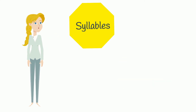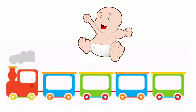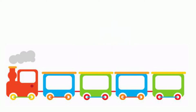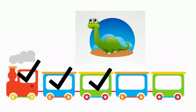Let's try some more words and count the syllables. Let's count syllables in words. Baby — say it slowly and tick the syllables. Baby. There are two syllables in the word baby. Let's count the syllables in the word dinosaur — say it slowly and tick the syllables. Dinosaur. There are three syllables in the word dinosaur.